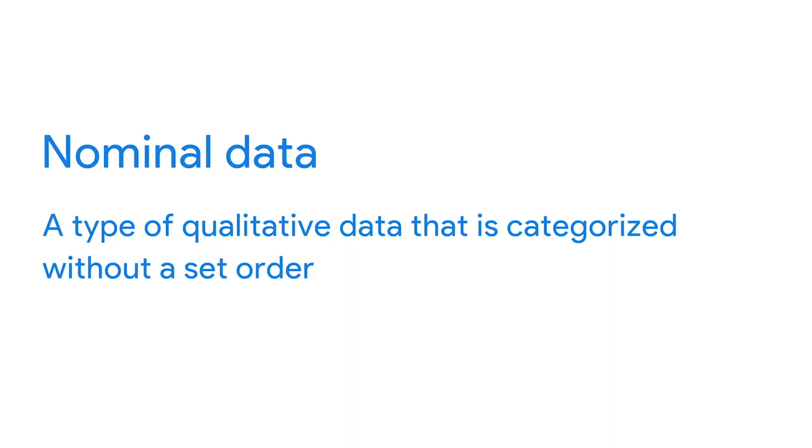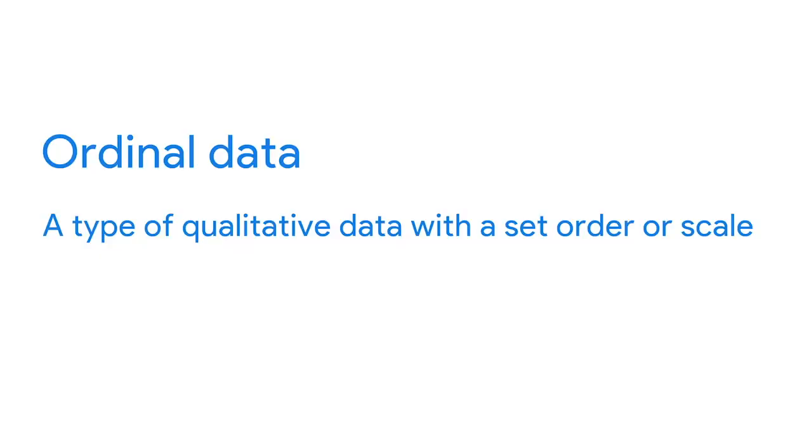There's also nominal and ordinal data. Nominal data is a type of qualitative data that's categorized without a set order — this kind of data doesn't have a sequence. For example, if you ask people whether they've watched a given movie, their responses would be nominal data: they could respond yes, no, or not sure. These choices don't have a particular order. Ordinal data, on the other hand, is a type of qualitative data with a set order or scale. If you asked a group of people to rank a movie from one to five, some might rank it as a two, others a four — these rankings are in order of how much each person liked the movie.